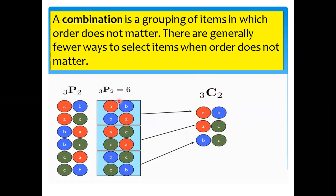That's how we differentiate permutation from combination. In permutation, order matters. In combination, it does not matter. Using your calculator, you can check the value of 3C2 by pressing 3, then Shift NCR, then 2. The answer is 3 — that's three possible ways using combinations.